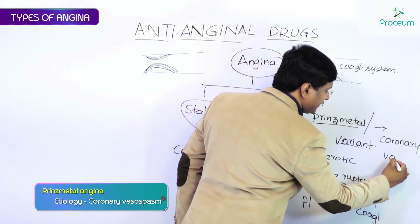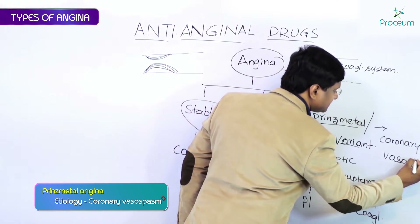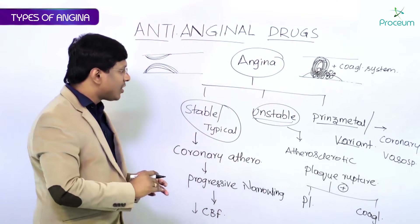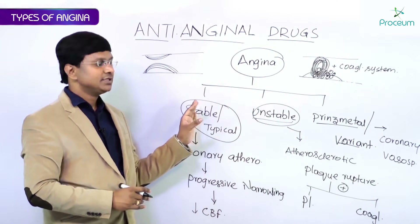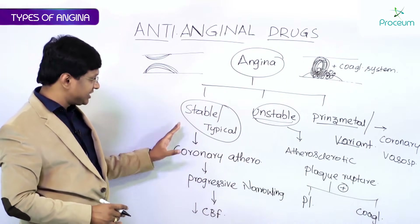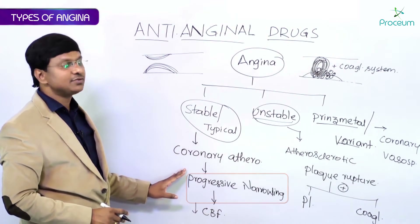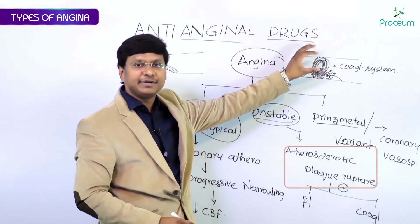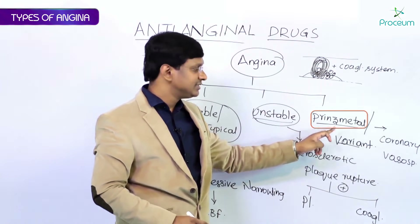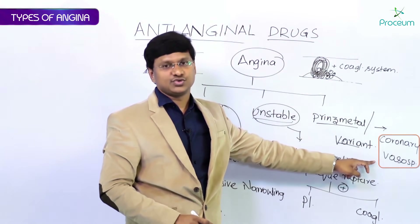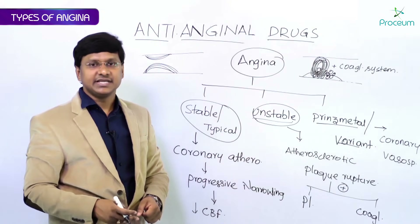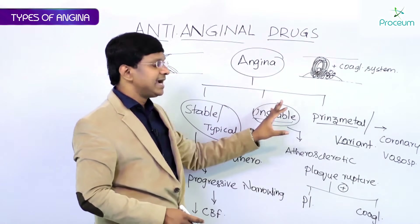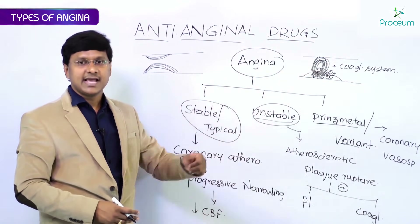Prinzmetal angina is due to coronary vasospasm. To summarize: stable angina is due to progressive narrowing of the blood vessel wall; unstable angina is due to plaque rupture causing complete blockade via platelet aggregation and coagulation activation; and Prinzmetal angina is due to coronary vasospasm. We will now discuss each type in more detail.